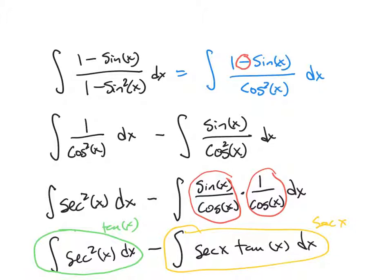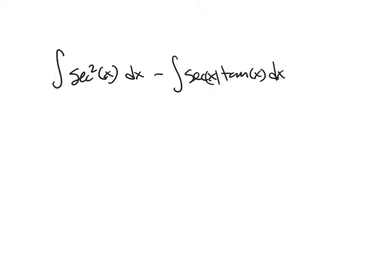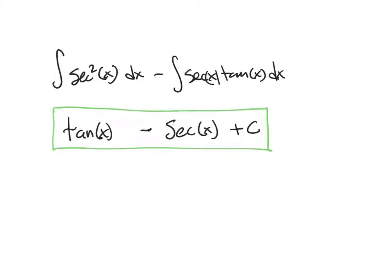When I go to the next screen we'll write this out again and get our final answer — and I think you'll agree that this one turned out to be easier than it looked. So on the last screen we had the integral of secant squared x dx, and now we take the antiderivative to get tangent of x, minus the integral of secant x tangent x, which is just secant of x. Then we put a plus C on there, and we have found the antiderivative for the original problem: the integral of 1 over 1 plus sine of x dx.